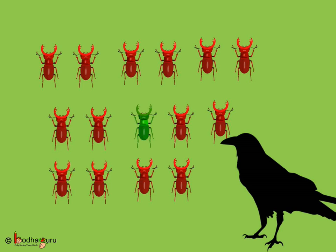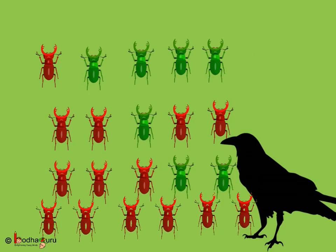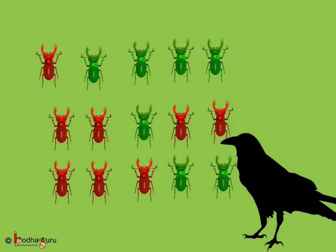which were easily spotted and eaten by the birds. Hence, the green beetles survived and passed on the green colour to the next generations. Thus, there were more and more green beetles in the coming generations.